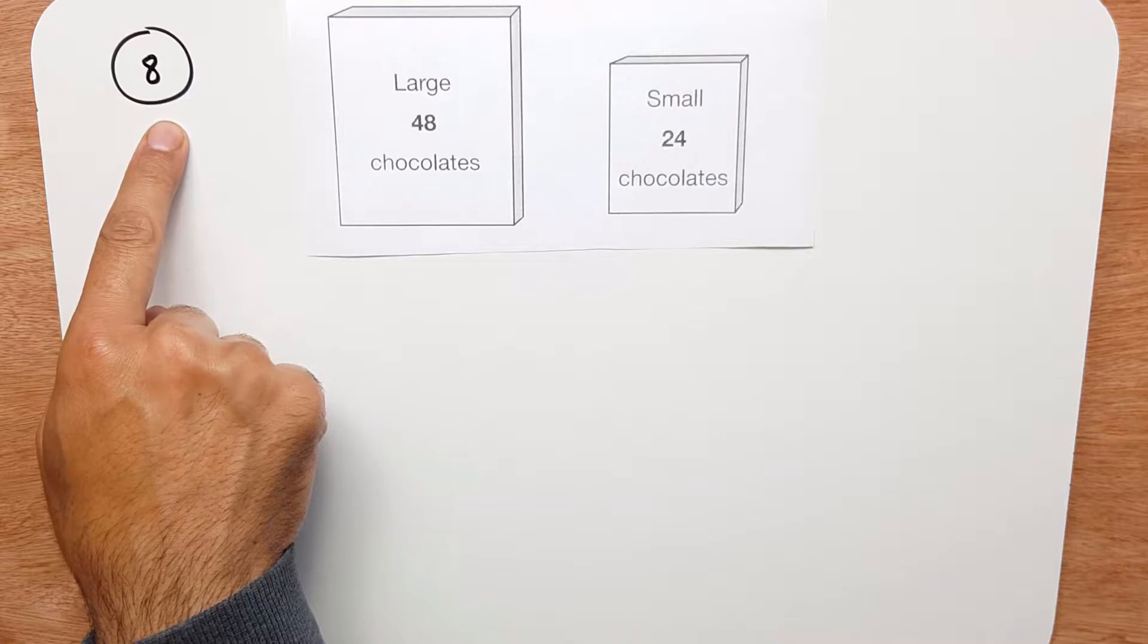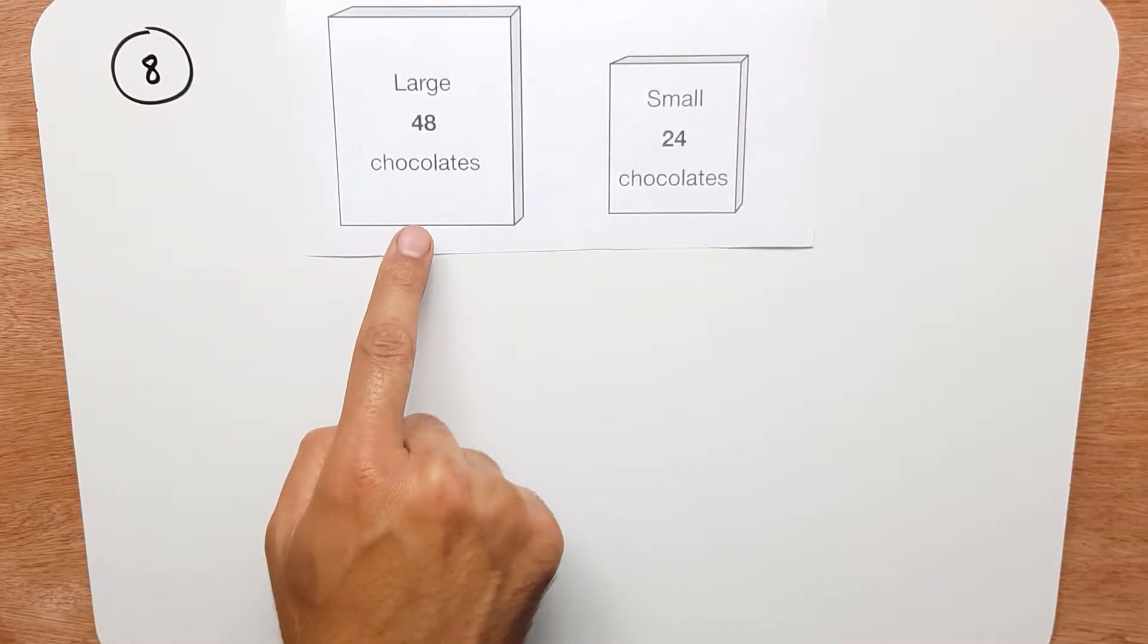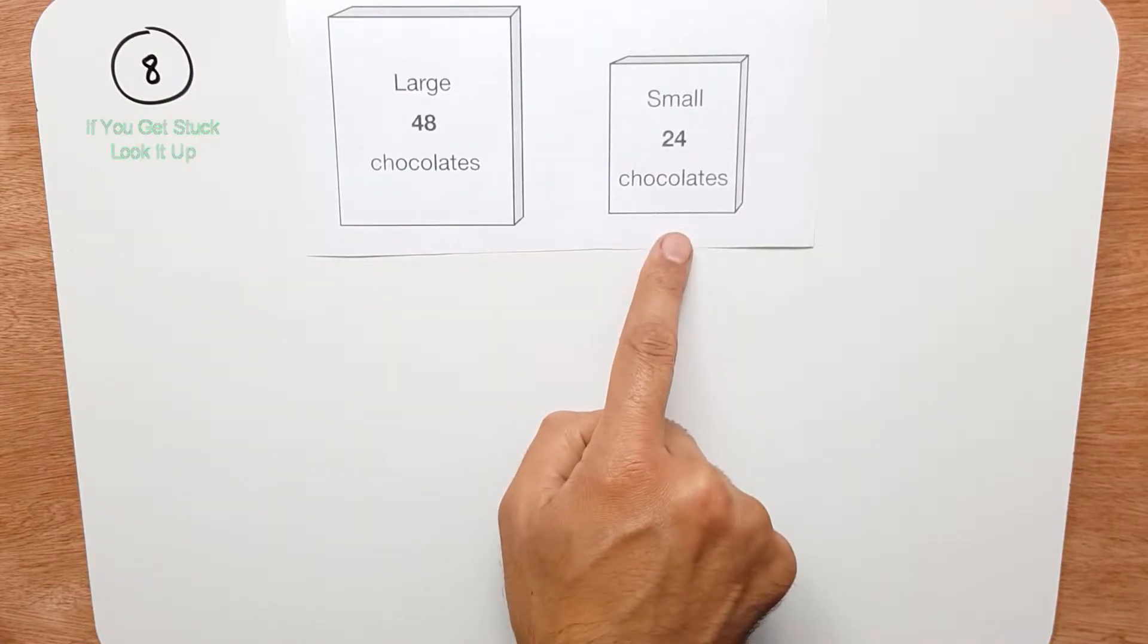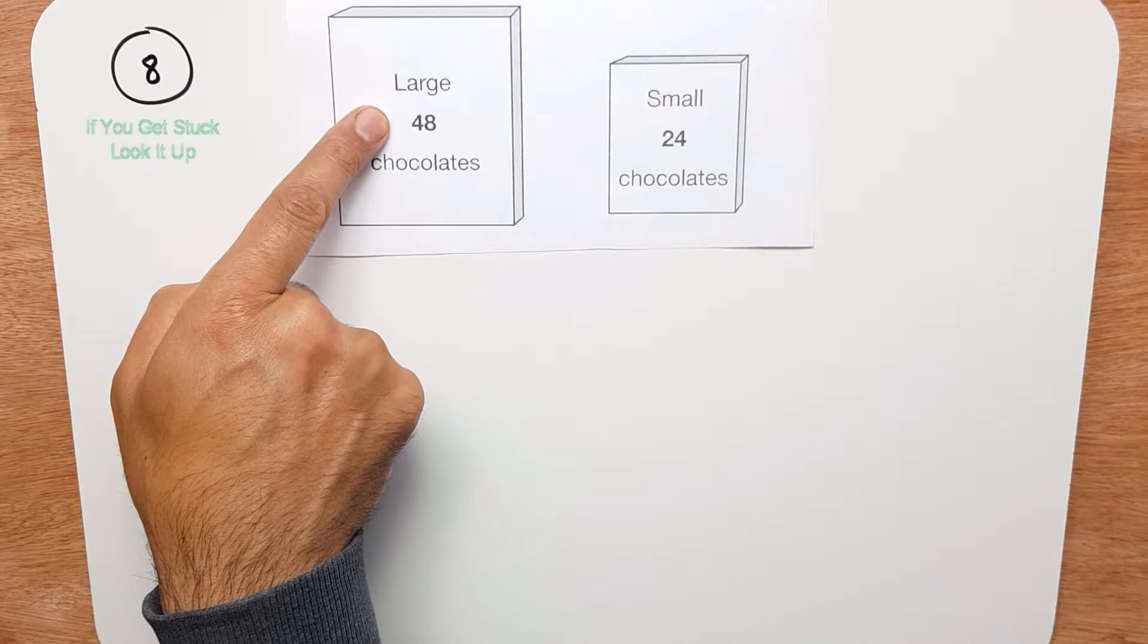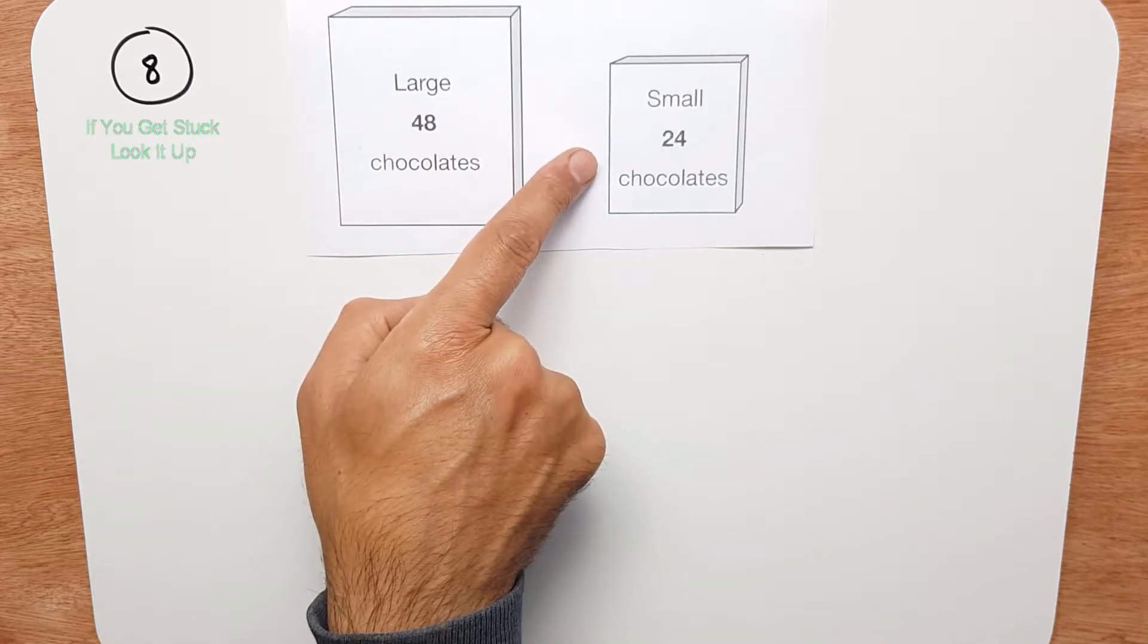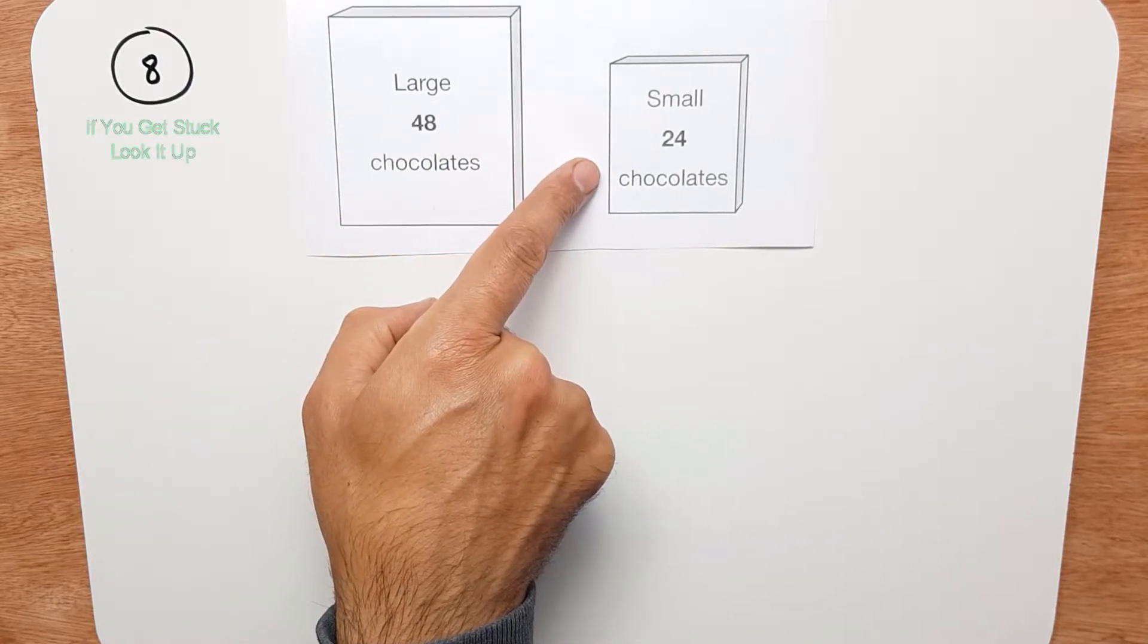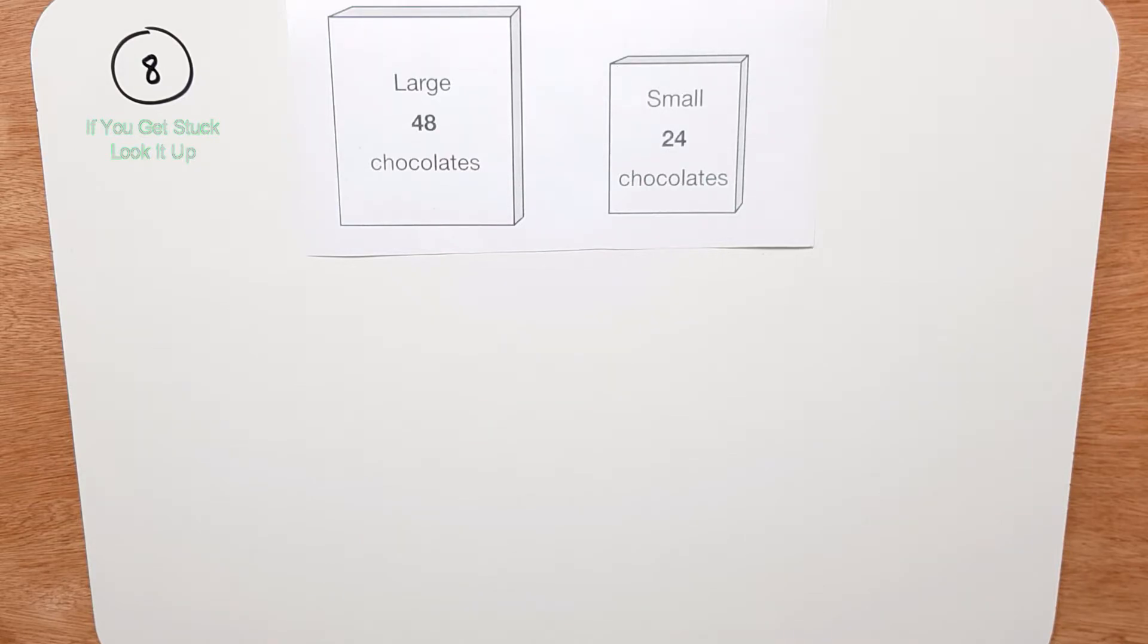In question 8, we're told that Ken buys 3 large boxes and 2 small boxes of chocolates. The large boxes contain 48 chocolates each, and the small boxes contain 24 chocolates each. How many chocolates in total did he buy?